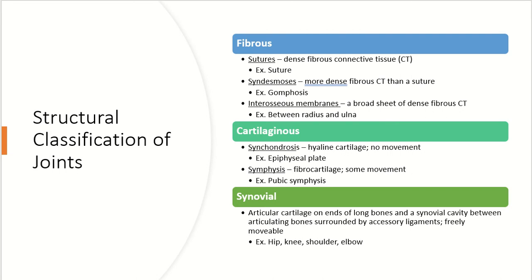We can break those classifications down further. Within fibrous joints, there are a couple of different groups. We have sutures — these are dense fibrous connective tissues, like the sutures that connect the bones of the skull. Then we have syndesmosis, which has more dense fibrous connective tissue than what you'd find in a suture. An example is a gomphosis, which holds your teeth in your head.